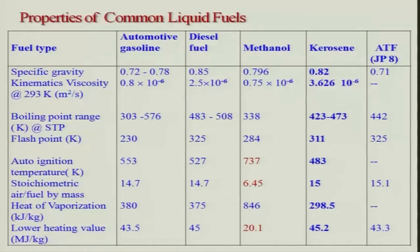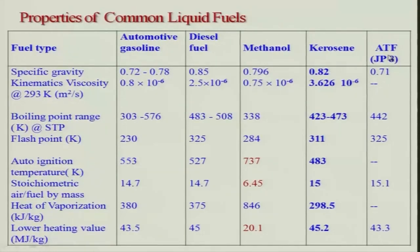Looking at typical values: the specific gravity of automotive gasoline is 0.70 to 0.78, while diesel is 0.85 — meaning a density of about 850 kg/m³ relative to water. Methanol is 0.796, kerosene is 0.82, and ATF (aviation turbine fuel) such as JP-8 has similar values. Kinematic viscosity is very important because if viscosity is too high, atomization becomes difficult.